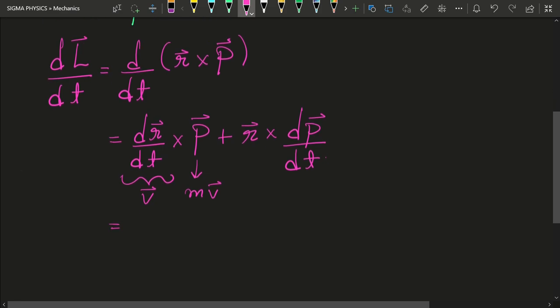And hence we will be left with r cross, what is dp upon dt? dp upon dt is nothing but the force on the body and hence we will be left with r cross f.